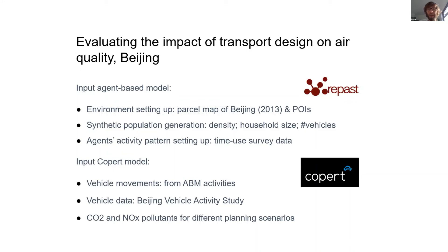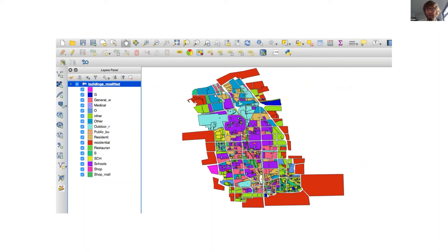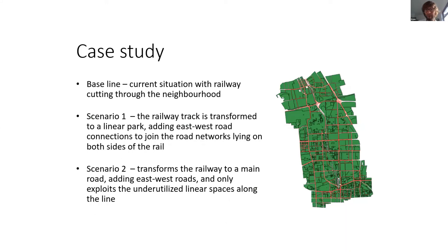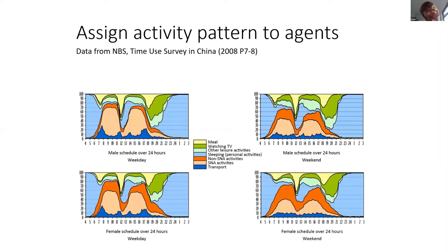We used a synthetic population set up from real sociodemographic data for the district — unlike the previous case which used real data — combined with time-use surveys to create activity patterns for agents. We could then simulate what would happen in that district, make changes to the layout, modify the input data, and see the response. That output was then piped into an additional model to calculate emissions and look at local air quality. We used tools like QGIS to prepare input data and looked at different scenarios for the railway line.